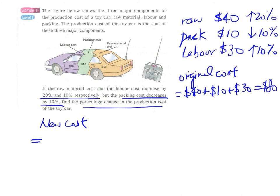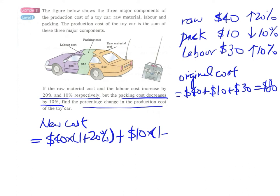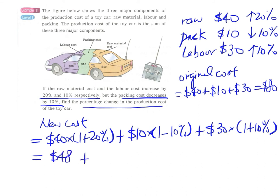Since raw material increased by 20 percent, we have $40 times (1 + 20%) = $48. Since packing cost decreased by 10 percent, we have $10 times (1 - 10%) = $9. Since labor cost increased by 10 percent, we have $30 times (1 + 10%) = $33.